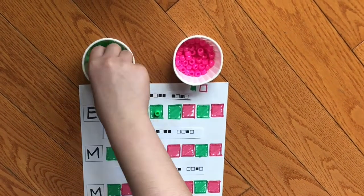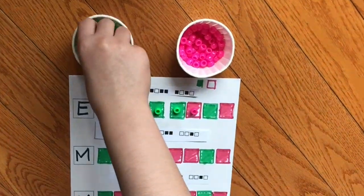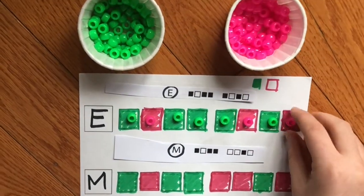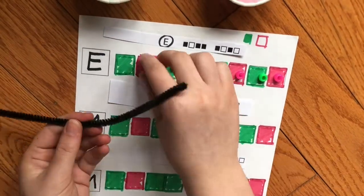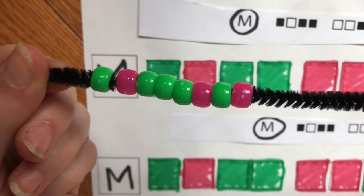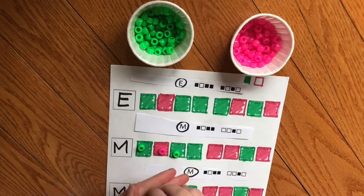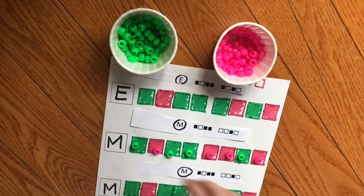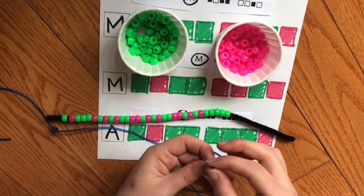Have your student place the correct colored beads on top of the colored boxes for each letter. After each letter, transfer the beads onto a pipe cleaner. This is what the letter E looks like in binary code. I use pipe cleaners because they are a lot stiffer than the string, which helps some students string the beads more successfully.